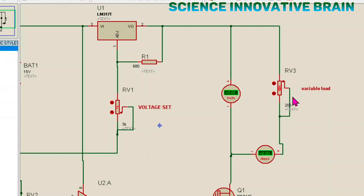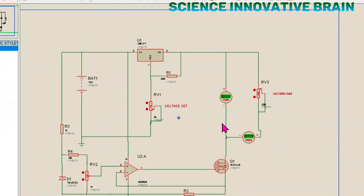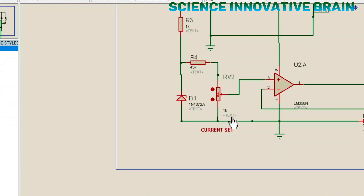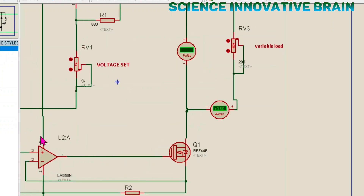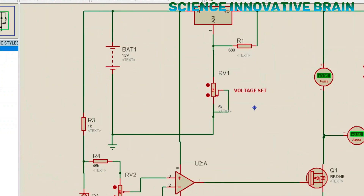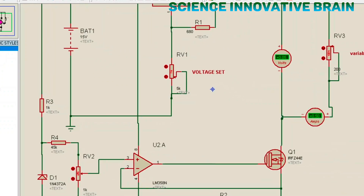Previously we set the voltage to 10 volts, so it should show 10 volts when the circuit is open. With the help of this current set potentiometer, we can set the maximum short circuit current. We have designed for one ampere. If I increase this potentiometer value, the short circuit current increases — previously it was limited to 0.5 ampere. Now I will set it to the 1 ampere limit.